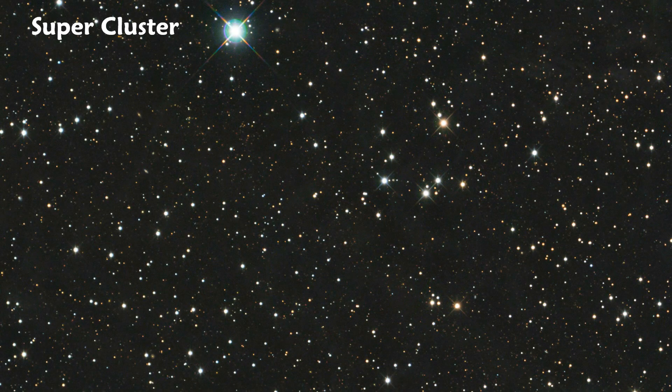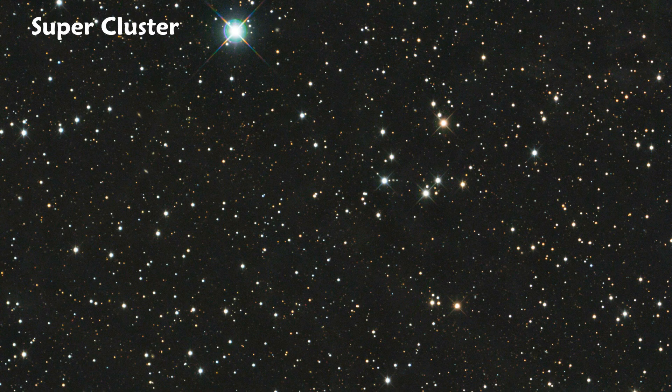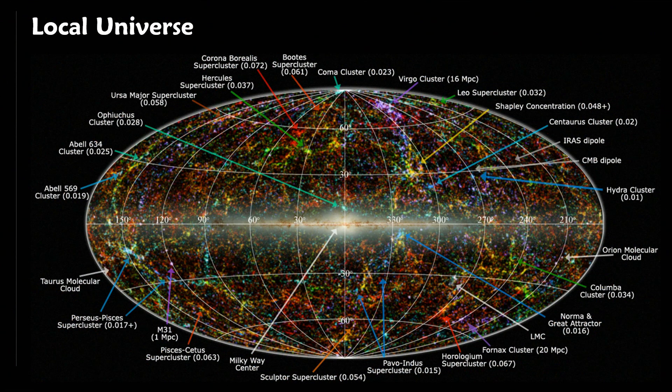Our galaxy, then, is nothing but a small bright dot on this map of superclusters. And now, in another step further away from Earth, we see that even superclusters shrink to small dots on your screen, when you're looking at our local universe. This is as far as we can see.